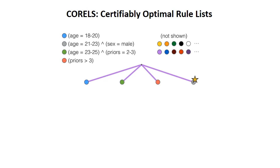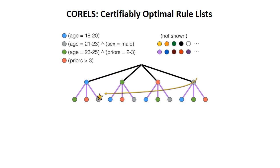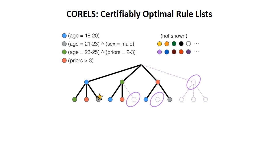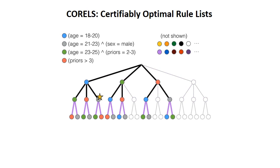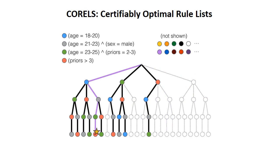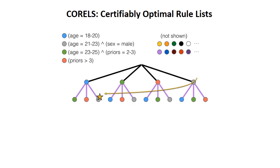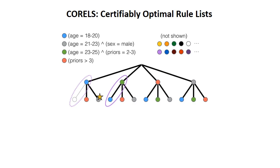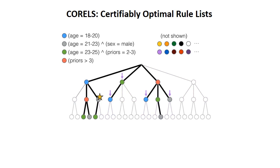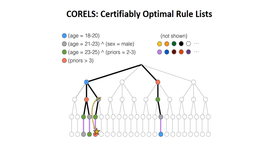In this paper, we produce an algorithm that actually optimizes over the full space of rule lists. The algorithm is called Certifiably Optimal Rule Lists, or CORELS. Rule lists are a kind of one-sided decision tree. If a very simple rule list model exists that predicts accurately on the training set, this algorithm is guaranteed to find it.